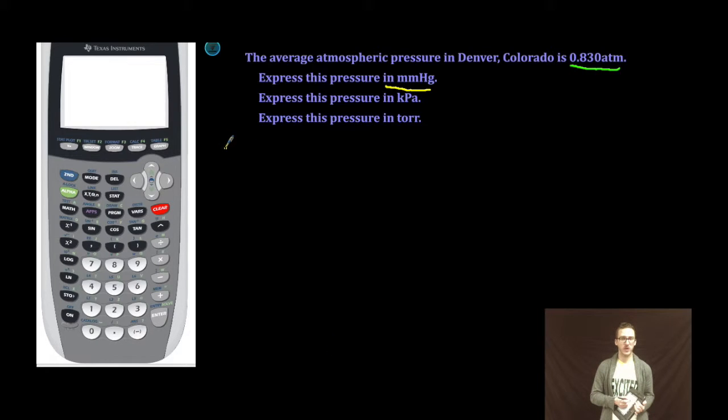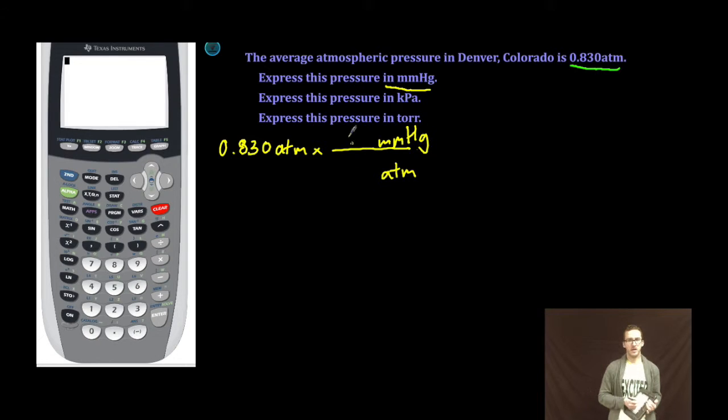So as with all other conversions, I'm going to start with the amount that I'm given in the problem. In this case, 0.830 atmospheres. I set up my conversion. Atmospheres at the bottom to cancel out. Millimeters mercury on top. Now, it's important to know that 760 millimeters mercury is the same as one atmosphere of pressure. And again, this relationship is provided on your formula chart.